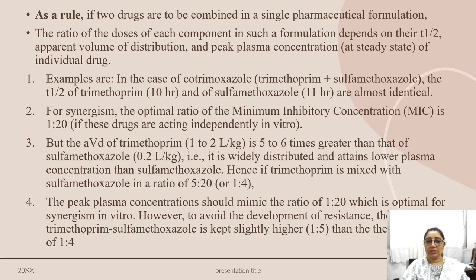The dose ratio should be 1:4, so that the peak plasma concentration mimics the optimal synergistic ratio of 1:20 in vitro. To avoid development of resistance, the trimethoprim-to-sulfamethoxazole ratio is kept slightly higher at 1:5 rather than the standard 1:4.